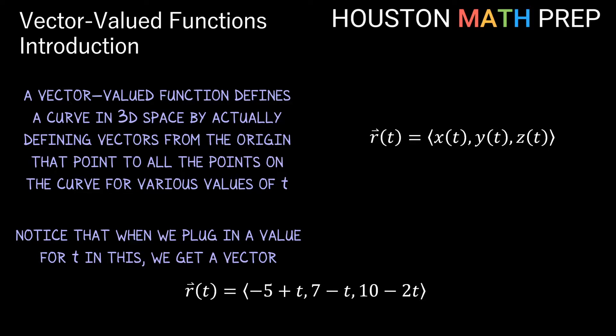Showing you how our vector-valued function r(t) on the screen here defines a line through space, we'll just start with the vector that we get when t equals 0 and the point that vector points to. As we start letting the t value get larger, you can see that the vector from the origin is changing, pointing to different places in 3D space.